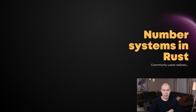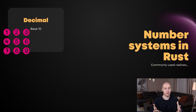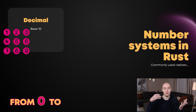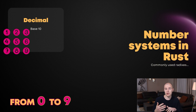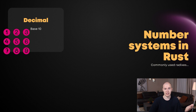The first number system that you probably are very familiar with is going to be the decimal number system, and the base of this number system is number 10. Basically, you have values available from 0 all the way to 9, and you can use these 10 digits to create any number. You should be very familiar with this one because this is our native way to represent numbers.